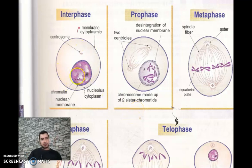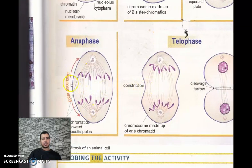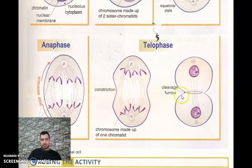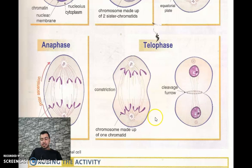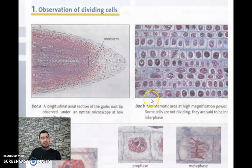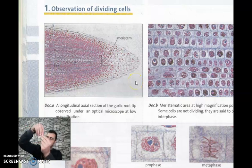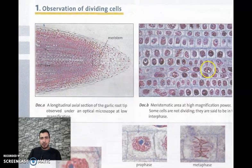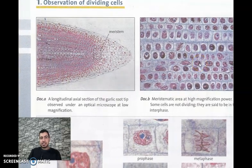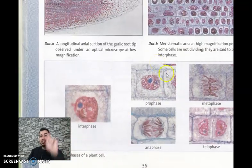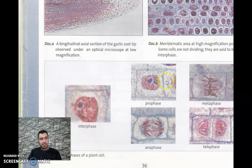You can see this figure in your textbook. During interphase, chromatin is not visible. During prophase, it is condensed with asters and spindle fibers. At metaphase, chromosomes are at the equatorial plate. Anaphase shows polar ascension. Telophase shows constriction and the cleavage furrow, meaning the cell is about to split into two.